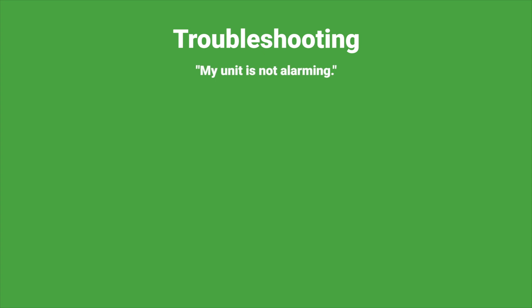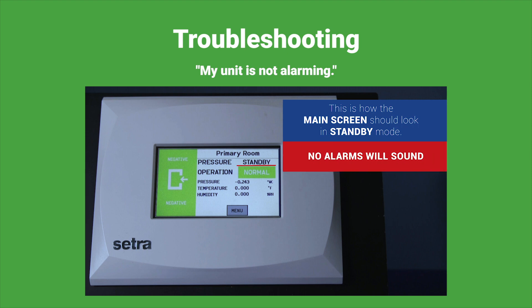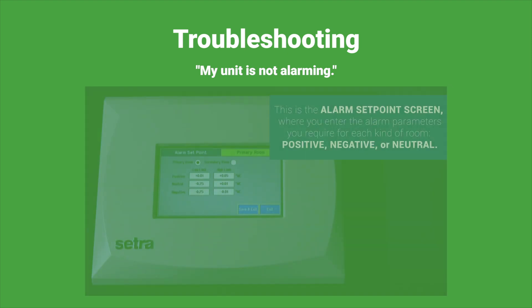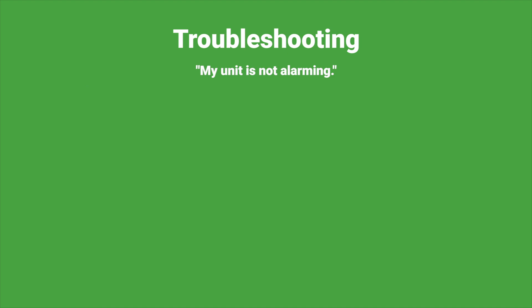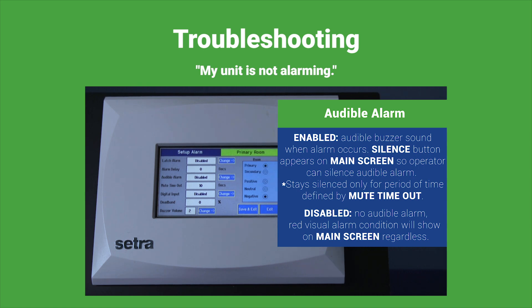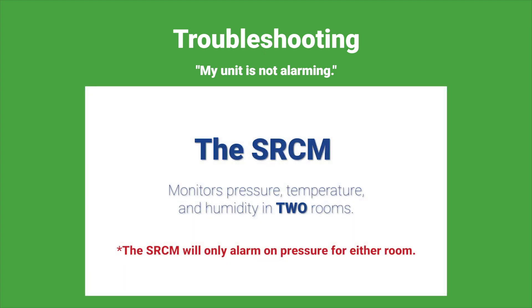My unit is not alarming. Make sure the unit is not in standby or no isolation mode — the unit will not alarm in either of these modes. Make sure to check the alarm set points; is the pressure outside of these points? If not, it will not alarm. Also check if the audible alarm is disabled — if so, there will be no audible alarm. Note that the SRCM will only alarm on pressure and not the other parameters it can monitor.